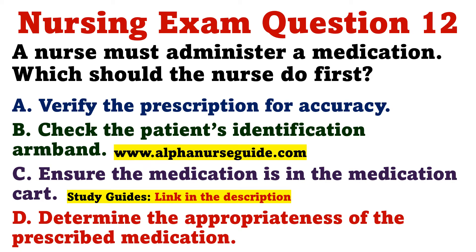A nurse must administer a medication. Which should the nurse do first? A) Verify the prescription for accuracy. B) Check the patient's identification armband. C) Ensure the medication is in the medication cart. D) Determine the appropriateness of the prescribed medication.